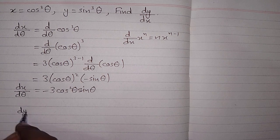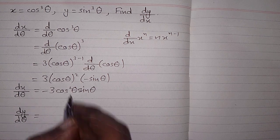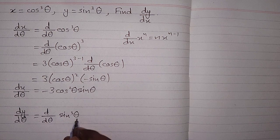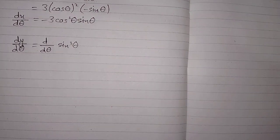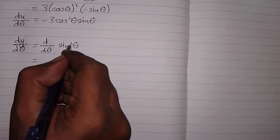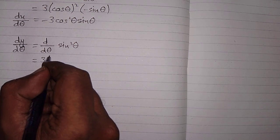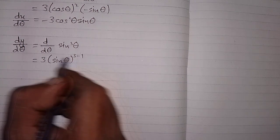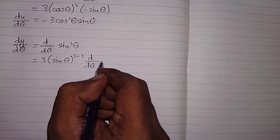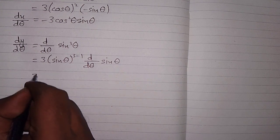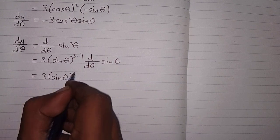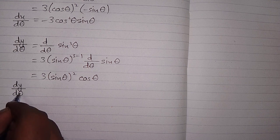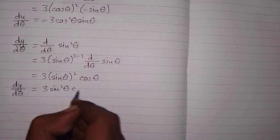Now we will find the derivative of y with respect to theta. y is sin cube theta, so we find the derivative of sin cube theta with respect to theta. The power 3 becomes the coefficient of sin theta and we subtract 1 from the power to get 3 sin theta raised to the power 2, then multiply by the derivative of sin theta which is cos theta. So dy by d theta is equal to 3 sin square theta cos theta.